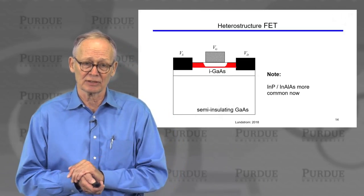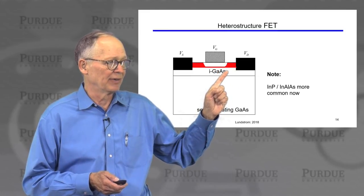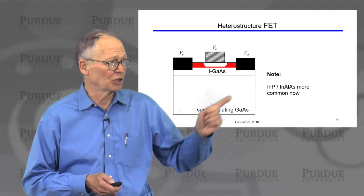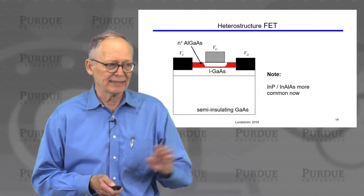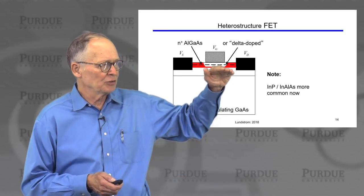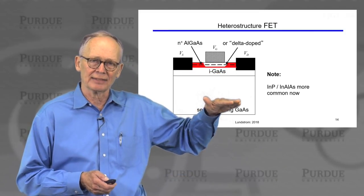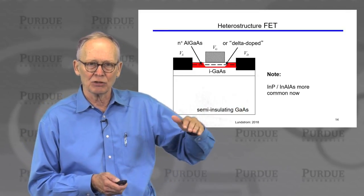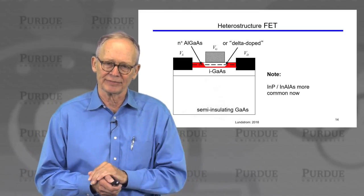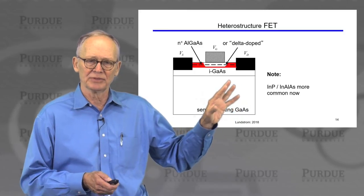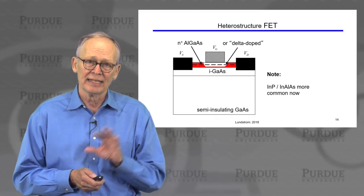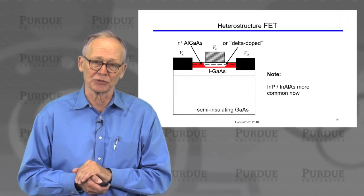The basic HEMT device structure has a wide-bandgap layer, an undoped small-bandgap layer, source and drain contacts, and a Schottky barrier gate with a depletion region around it. More commonly today, instead of uniformly doping the wide-bandgap layer, people use delta doping: an undoped wide-bandgap layer is grown, one atomic plane of dopants is added, and then the undoped layer continues. The dopants are confined to one plane set back from the interface. Modern devices more commonly use indium phosphide, indium aluminum arsenide, and indium gallium arsenide material systems rather than the original aluminum gallium arsenide / gallium arsenide system.